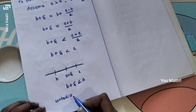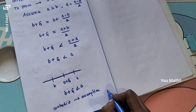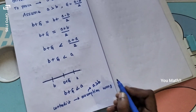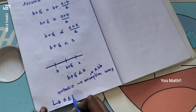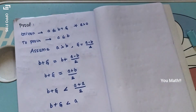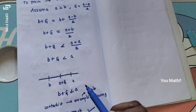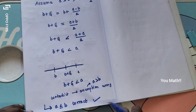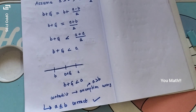This contradicts our assumption. So the assumption is wrong. The assumption was a is greater than b, which led to a contradiction. Therefore a is less than or equal to b. So if you assume a is greater than b, it leads to a contradiction, which proves a is less than or equal to b. This completes the proof.